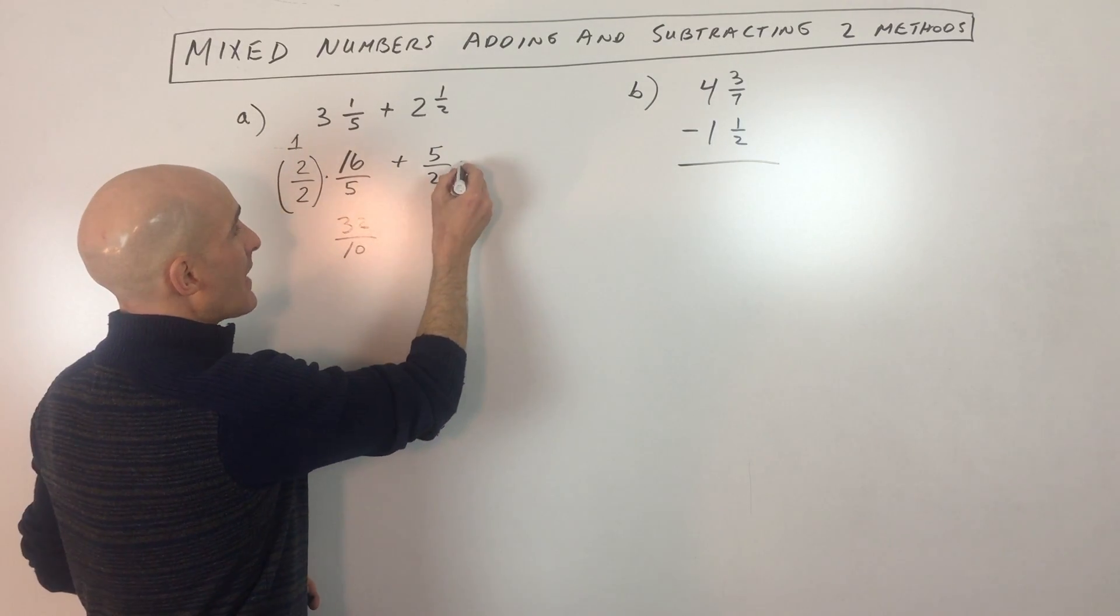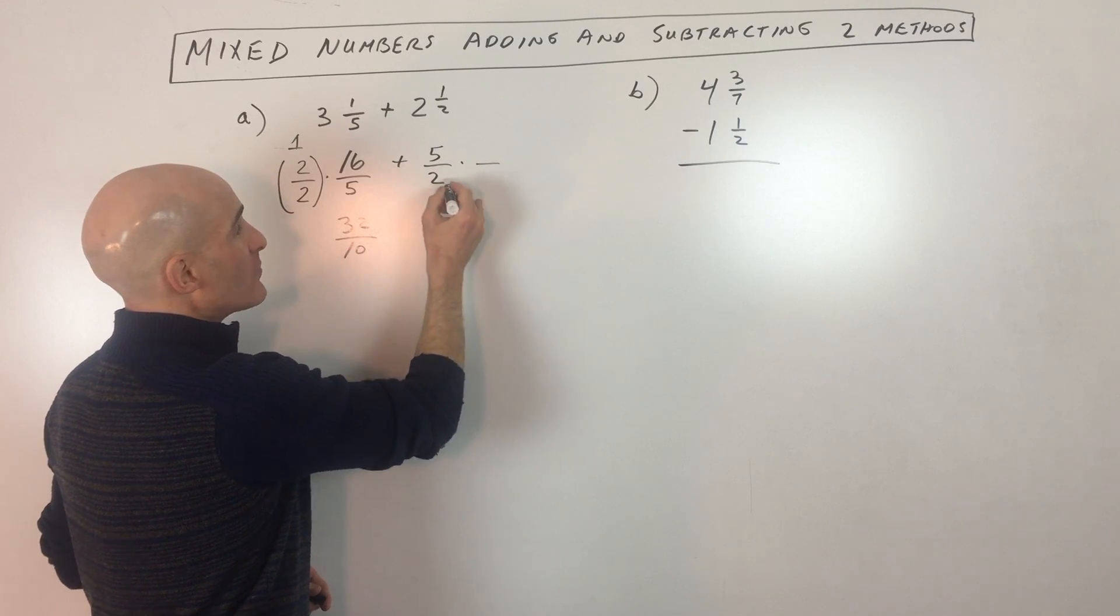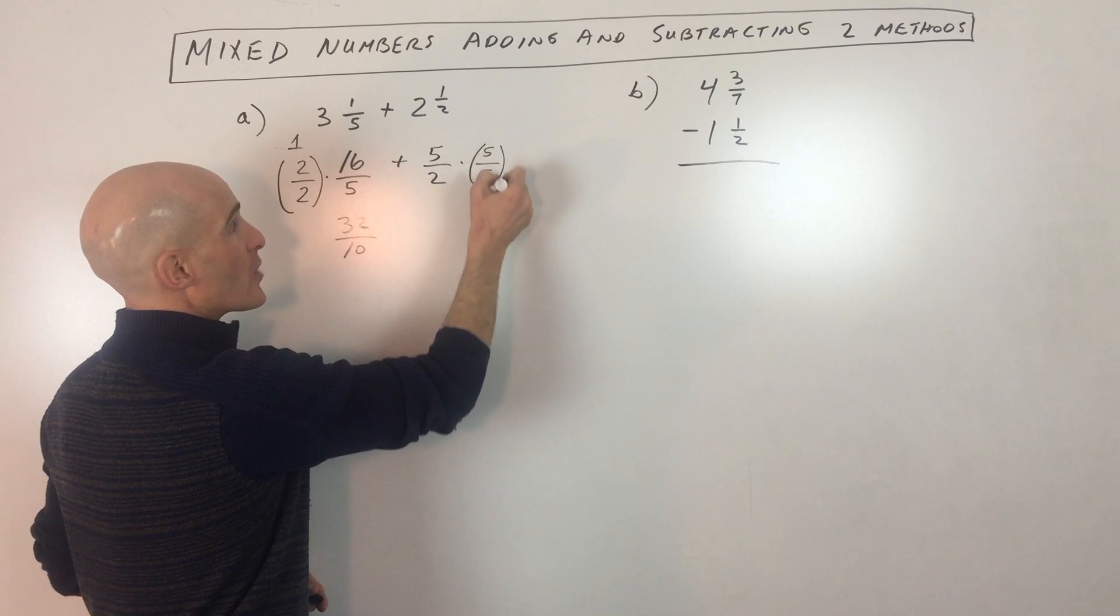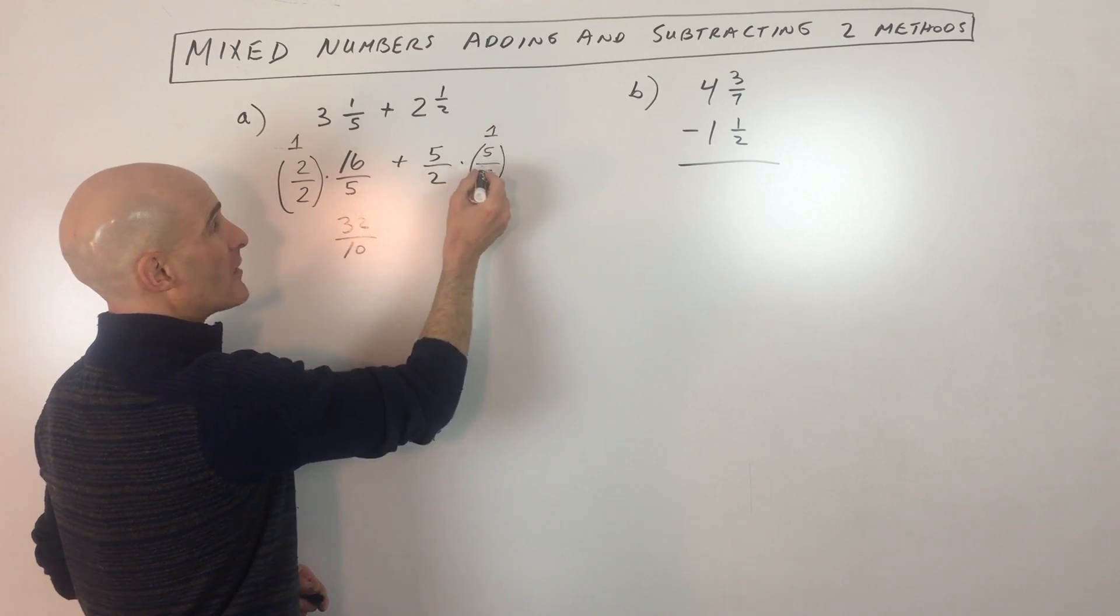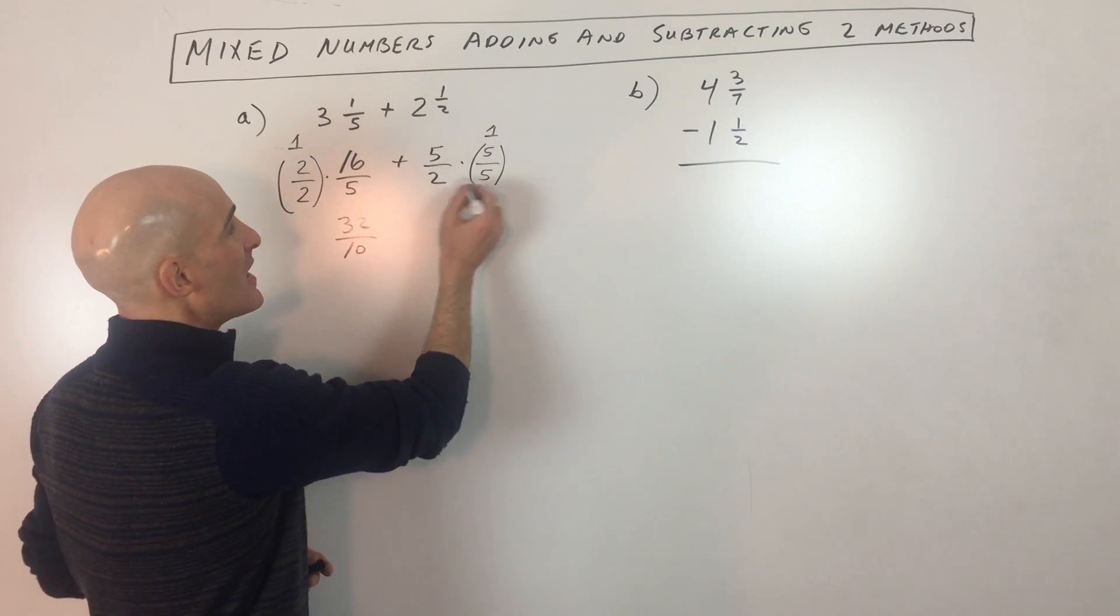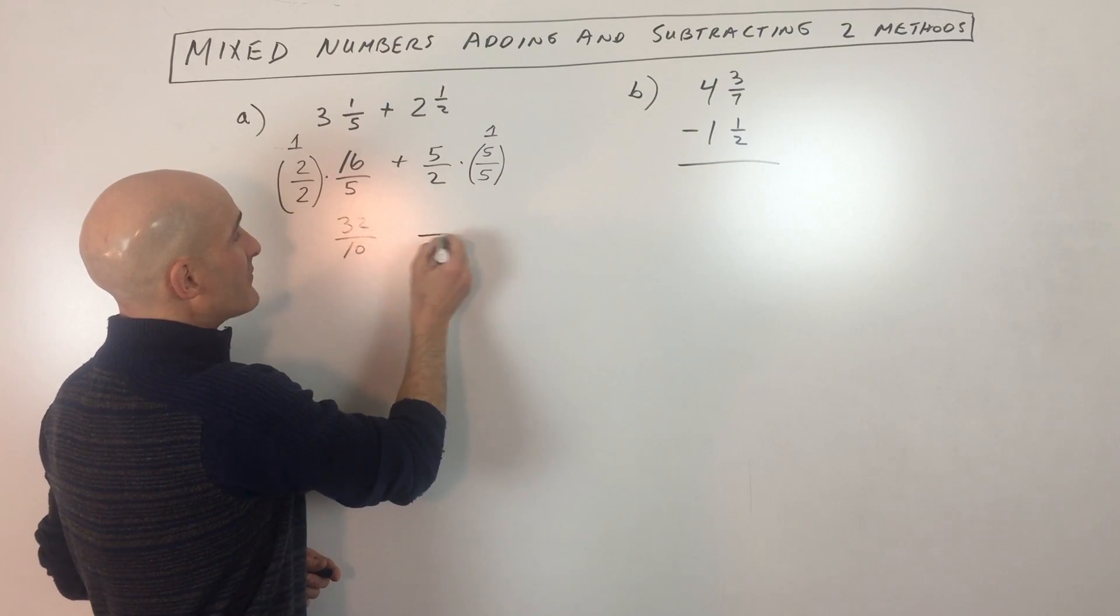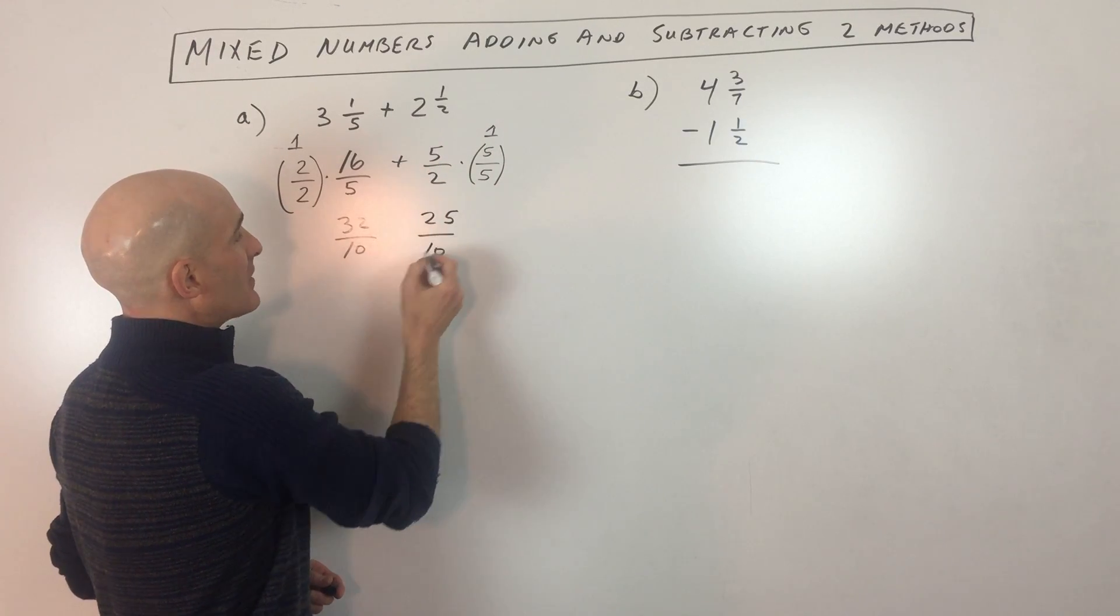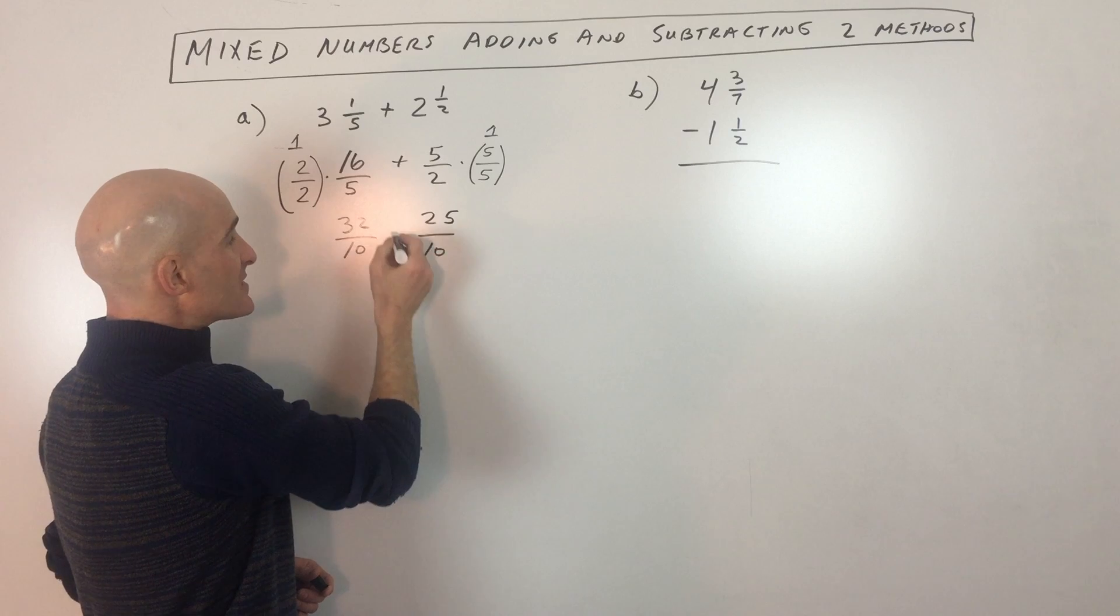Same thing over here. We want this denominator to also be 10. So we're going to multiply the bottom by five. But whatever we do to the denominator, we want to do to the numerator because, again, five divided by five is one. One times anything is going to be itself. So we're not changing it. We're just changing the way that it looks, giving it a different denominator. So two times five is 10. Five times five is 25. And so we've converted it into tenths.